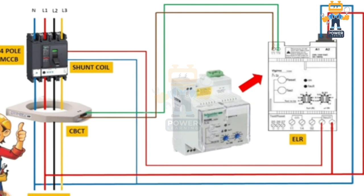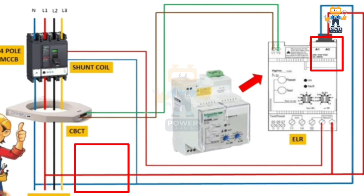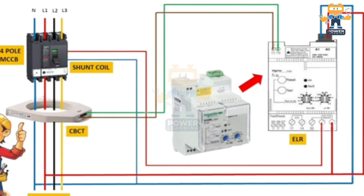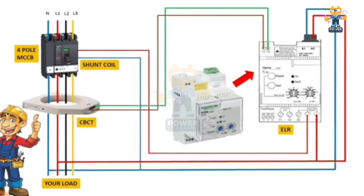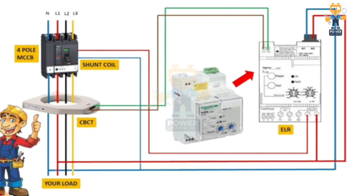Next, we take two wires — one neutral and one phase wire — and connect them to power up our earth leakage relay. The power terminals on the earth leakage relay are A1 and A2. We took these two wires from the load side and connected them directly into A1 and A2, so the earth leakage relay is now powered up.